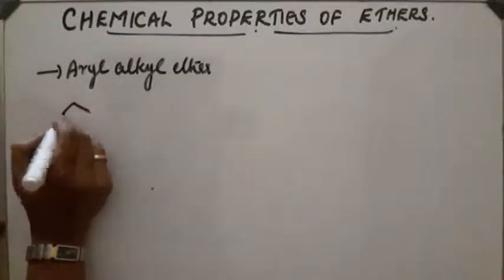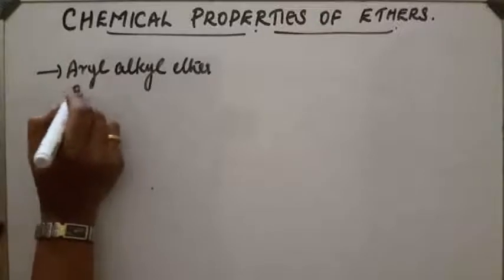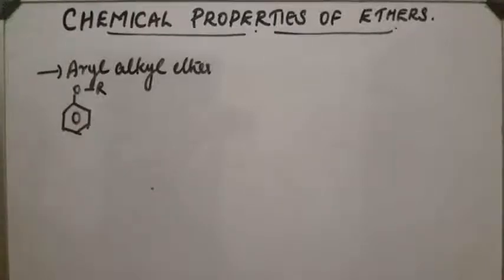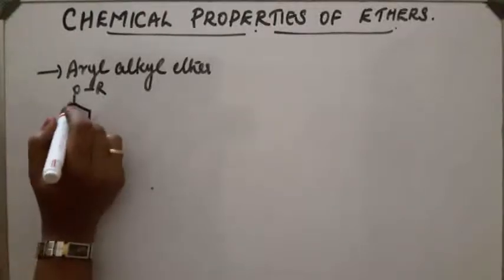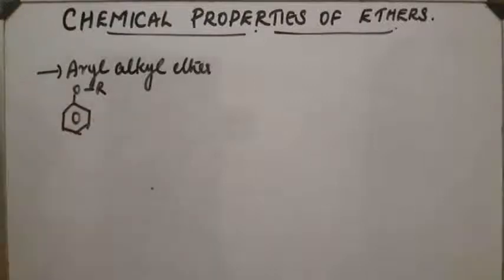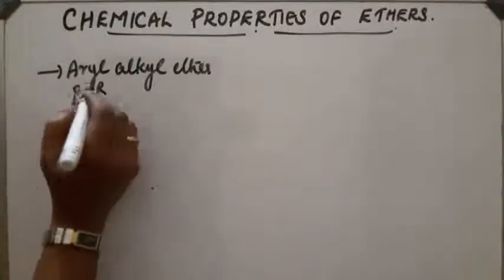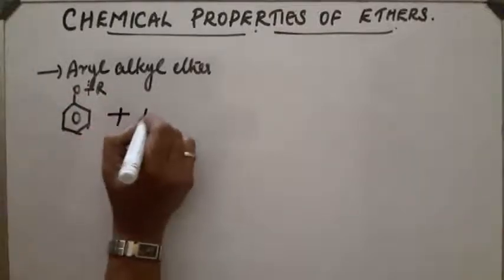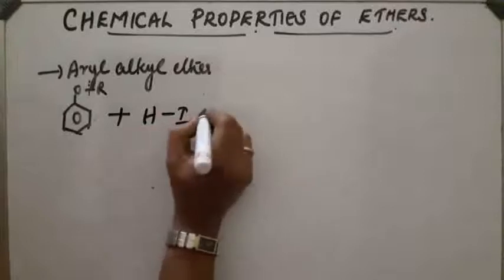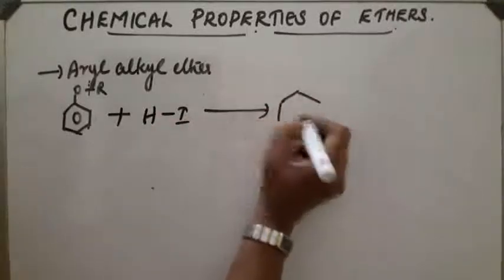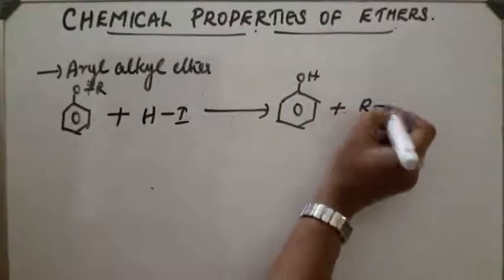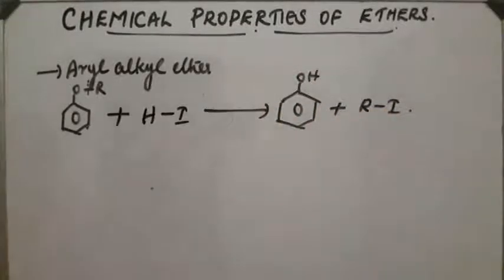When oxygen is attached to one alkyl group and one aryl group, the carbon attached to the aryl ring is sp2 hybridized, giving partial double bond character to that C-O bond. This makes it highly stable, so cleavage takes place at the other C-O bond. On reaction with HI, the product obtained is phenol and RI.